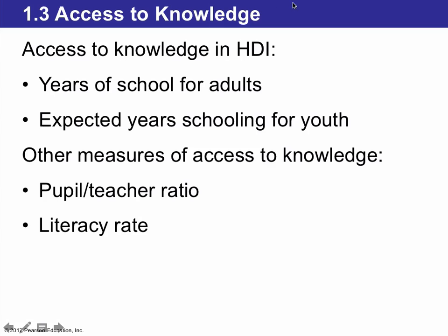The other part of the HDI is access to knowledge — how much access to education people have. This means how many years of school adults get, how many expected years of schooling the youth receive, and other measures such as the number of students per teacher in each classroom and the literacy rate — how many people know how to read and write.